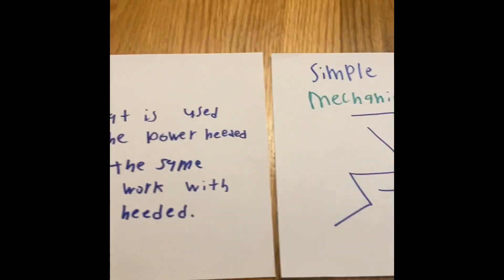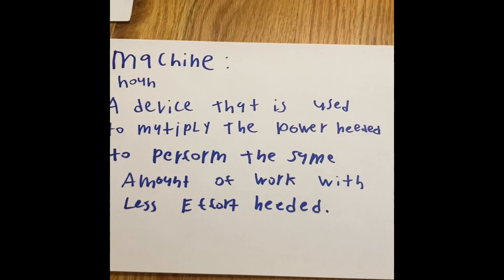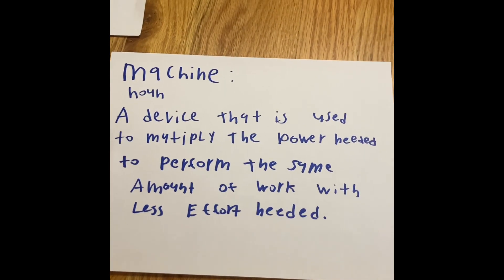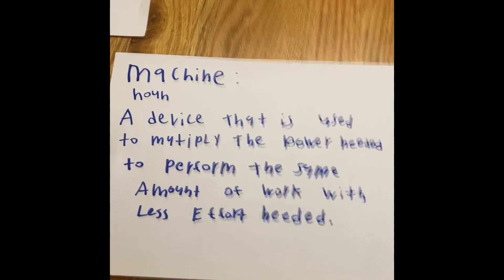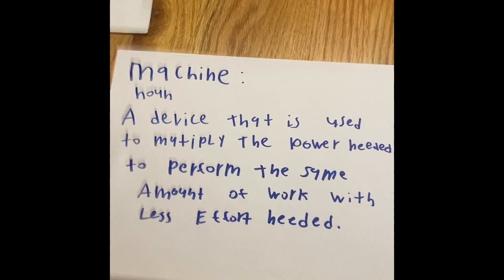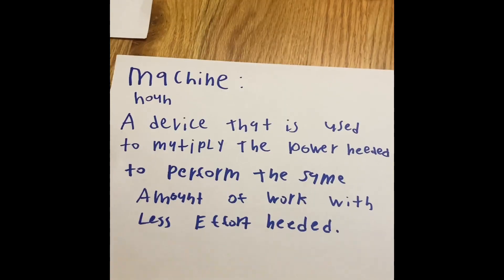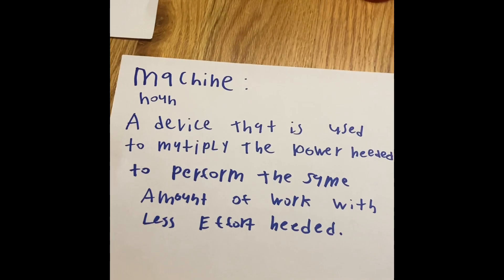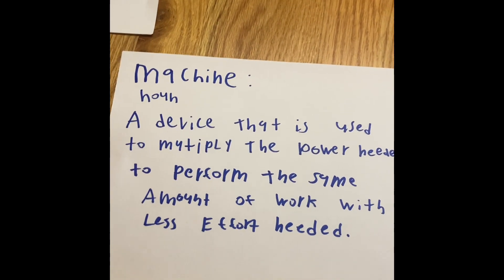In the last video, we have been taking a look at machines. So a machine is a device that is used to multiply the power needed to perform the same amount of work, with less effort needed. The machine or machines are supposed to alleviate the amount of effort needed to complete a task.